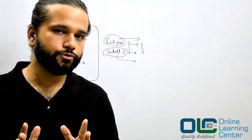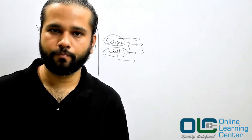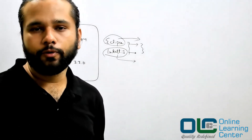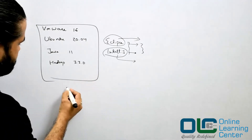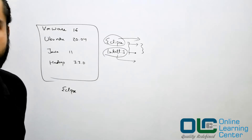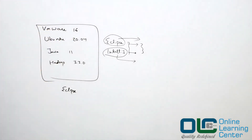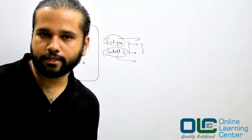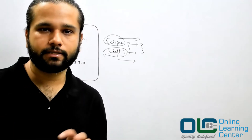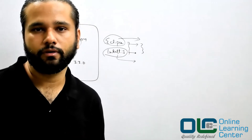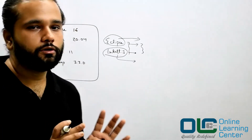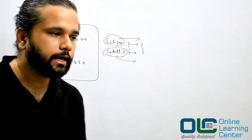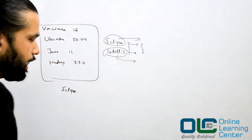Let's talk about how to use the Eclipse plugin for Hadoop. We have already seen how to install Eclipse on Ubuntu. Earlier, when we wanted to do any operations on HDFS, we had to start our Hadoop services and open the terminal and write Hadoop FS -ls, Hadoop FS -mkdir, Hadoop FS -put, and so on. Now, we don't want to do all those things using the command line. Is there any UI, or is there any way to do these operations from within Eclipse? That's what I want to show you.